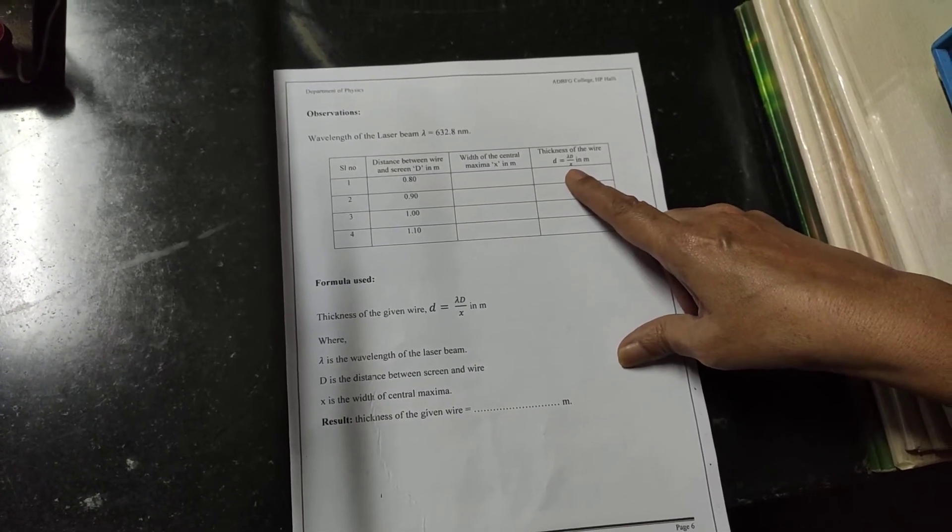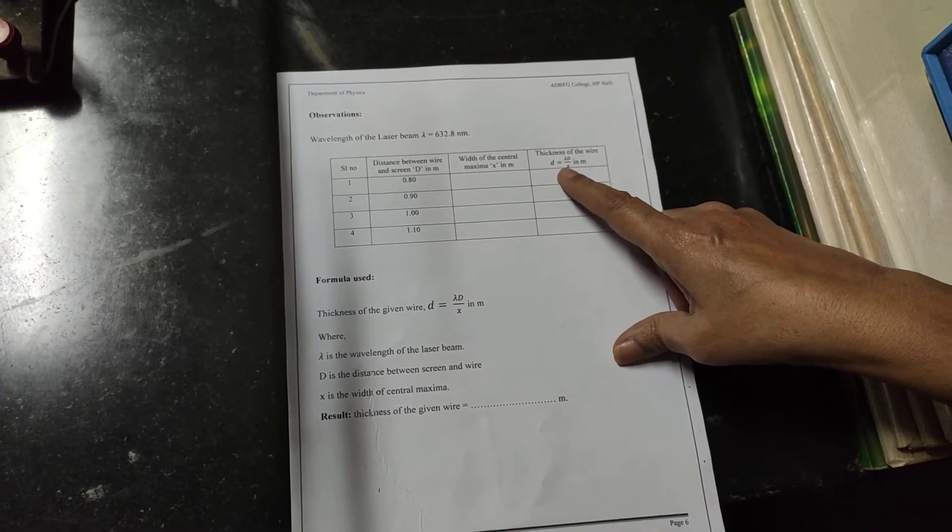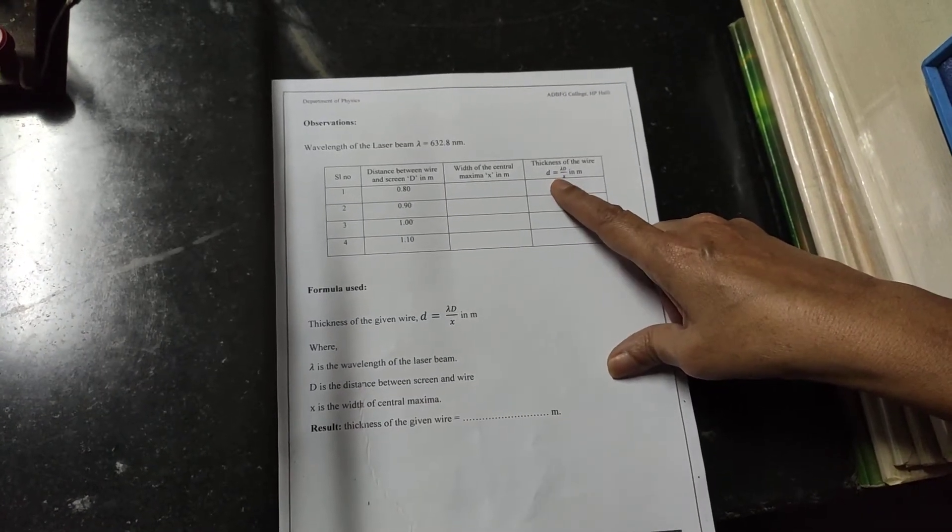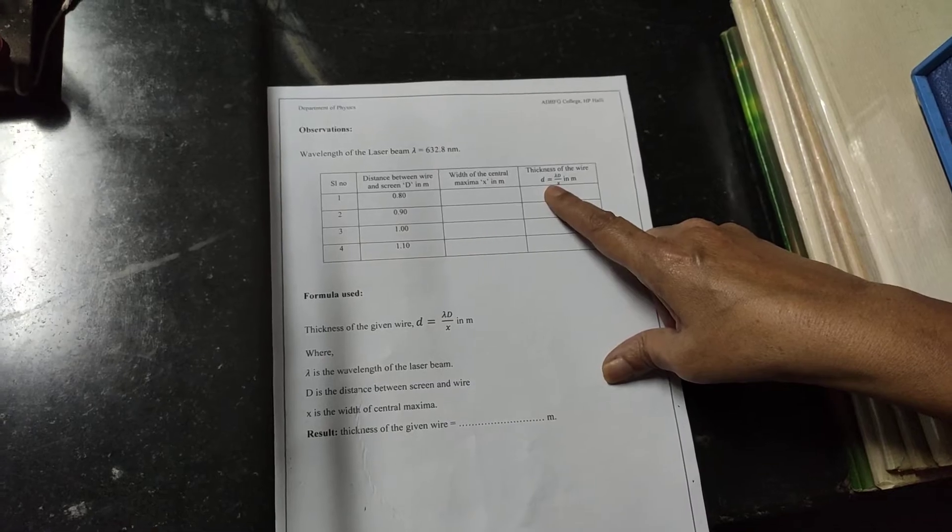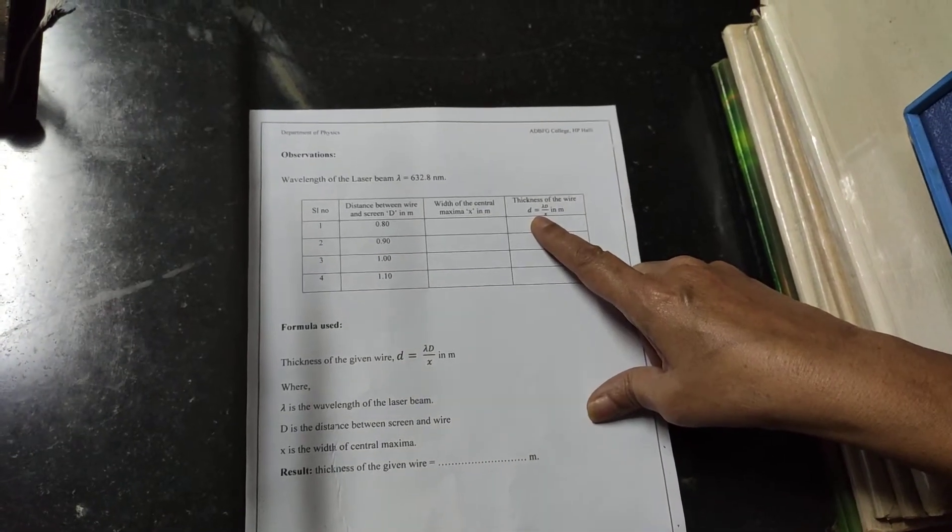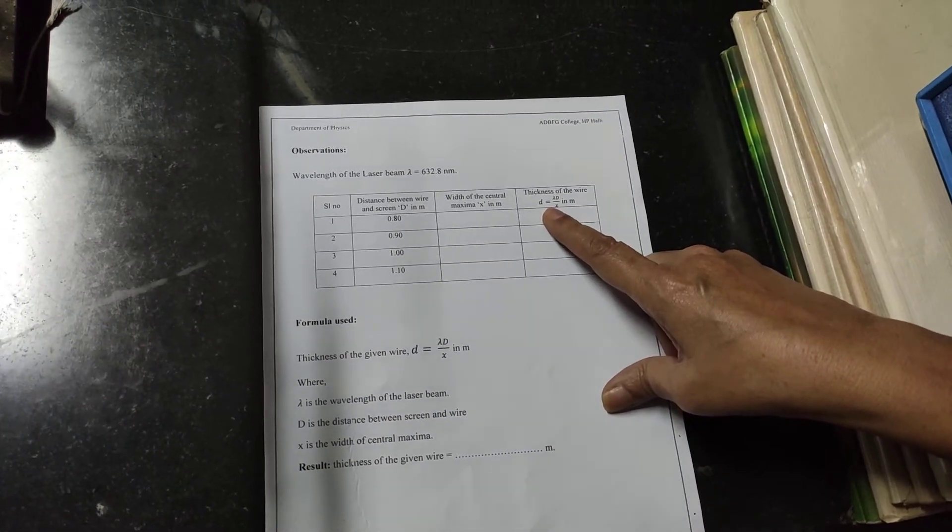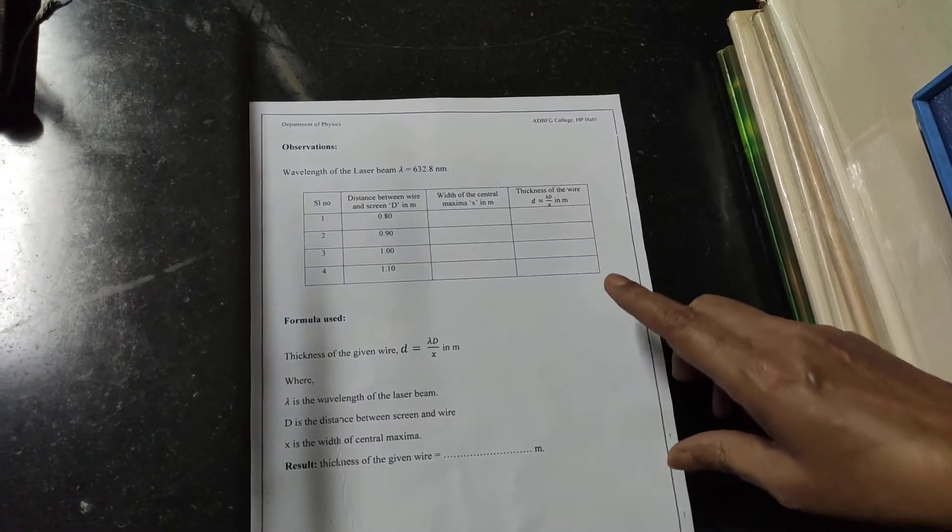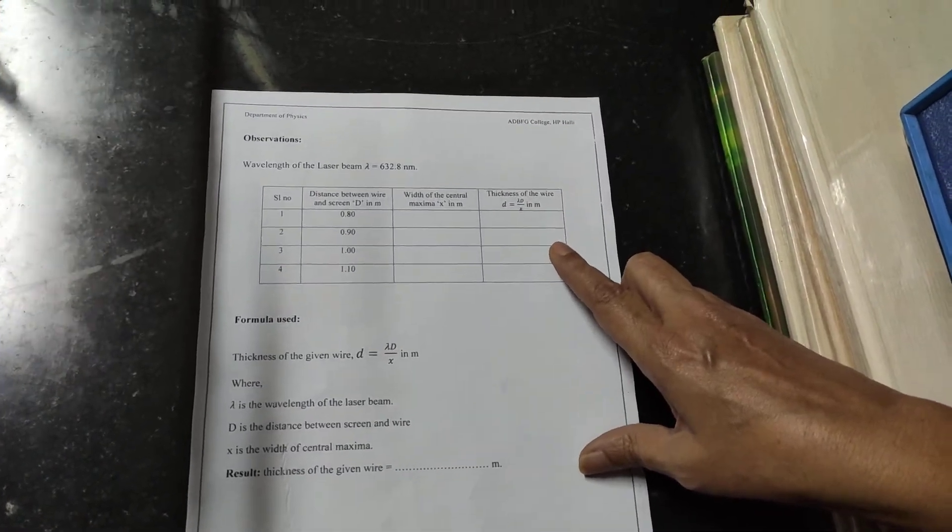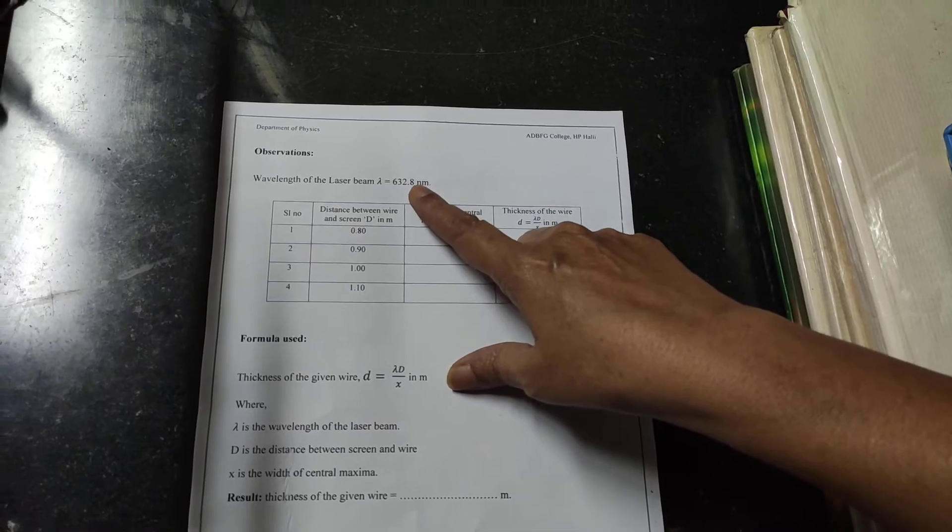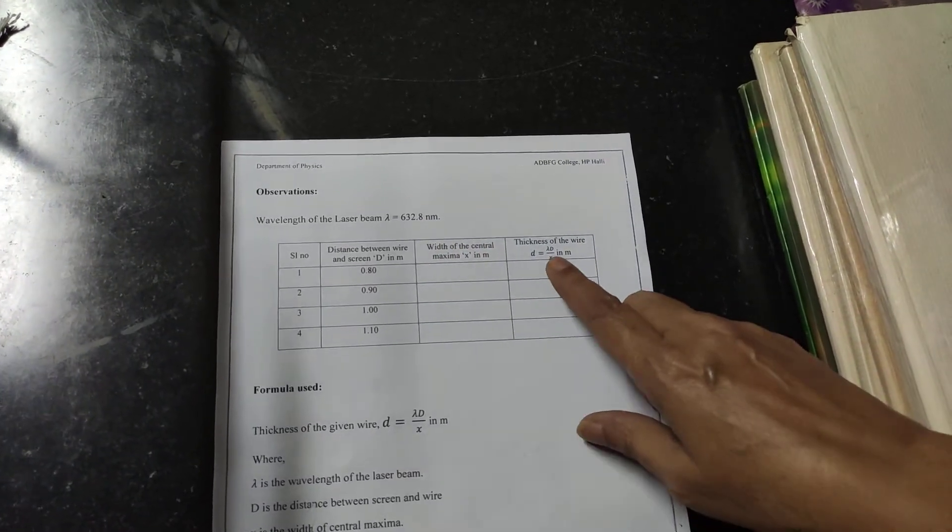This is your final formula. This is your final formula for calculating the thickness of the wire. The aim of the experiment is to determine the diameter of the wire or thickness of the wire using a diffraction phenomena and the source of light we have used here is laser. So the laser wavelength is given here. So lambda is given.